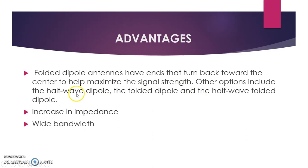Now the advantages of the folded dipole. Folded dipole antennas have ends that turn back towards the center to help maximize the signal strength. Other options include the half-wave dipole, the folded dipole, and the half folded dipole. The increase in impedance and the wide bandwidth — wide bandwidth being the most popular advantage of the folded dipole.